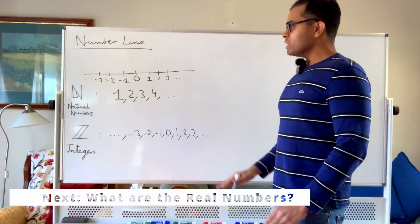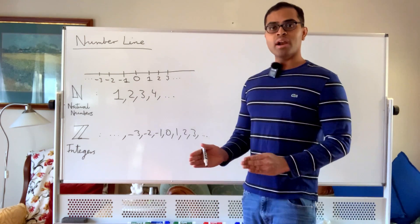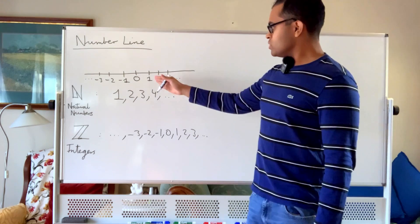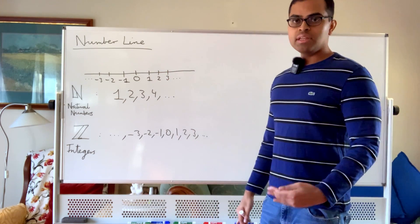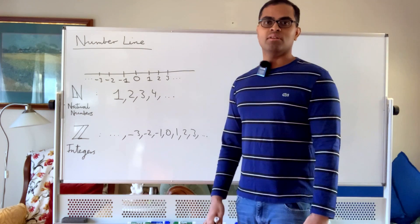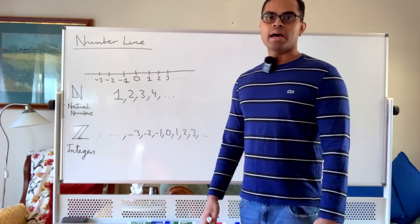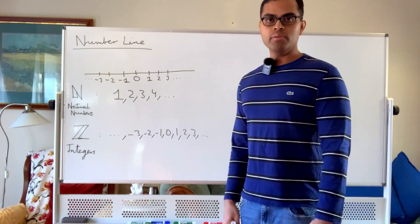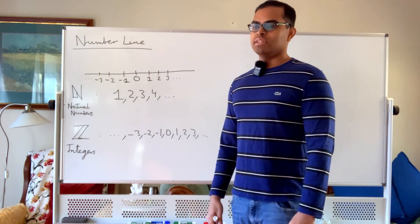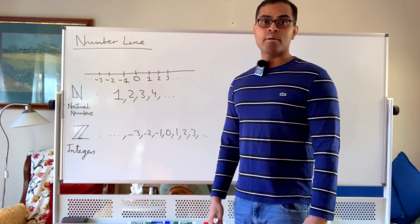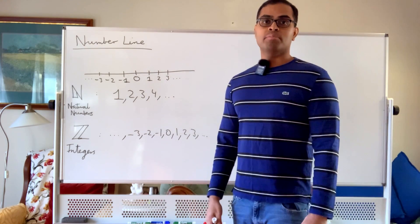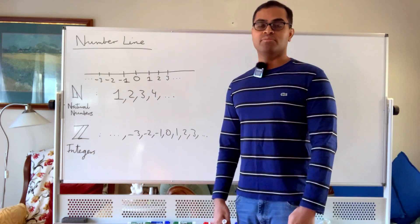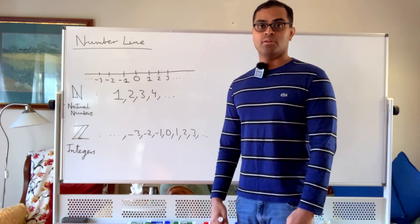Once we have the natural numbers and the integers, the next step is to look at what happens between consecutive integers. What are the numbers between one and two? It's very natural to consider, for example, that you can drink one and a half bottles of water or eat one third of a pizza. If I have six apples and want to give them to nine people, each person gets six over nine, which is two thirds. So it's very natural to consider numbers that are not integers.